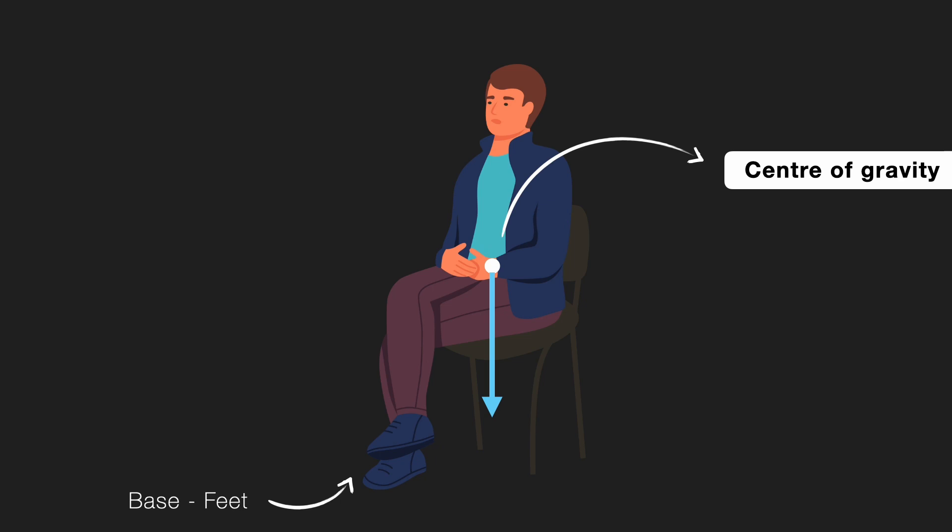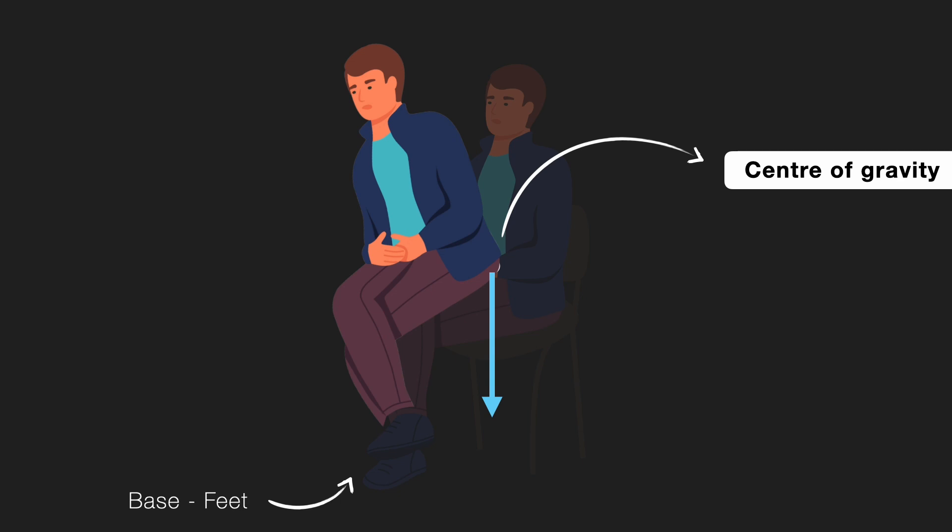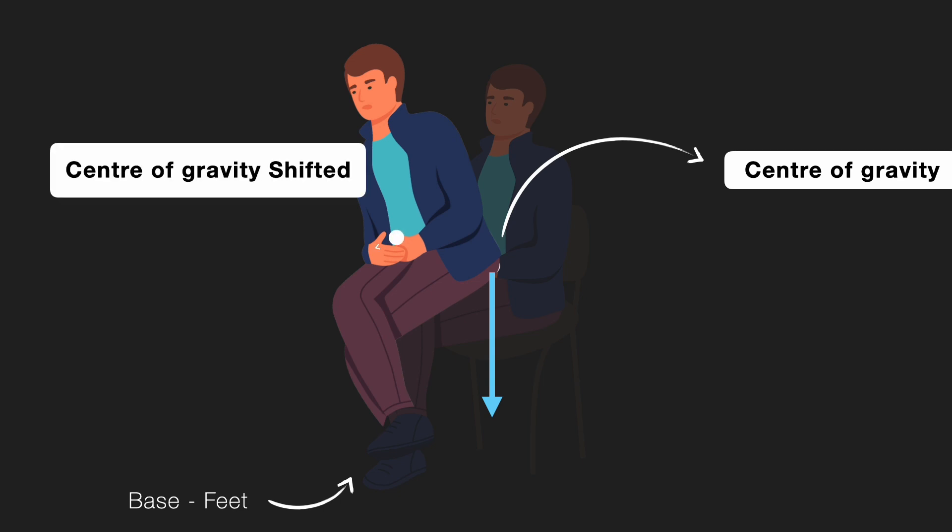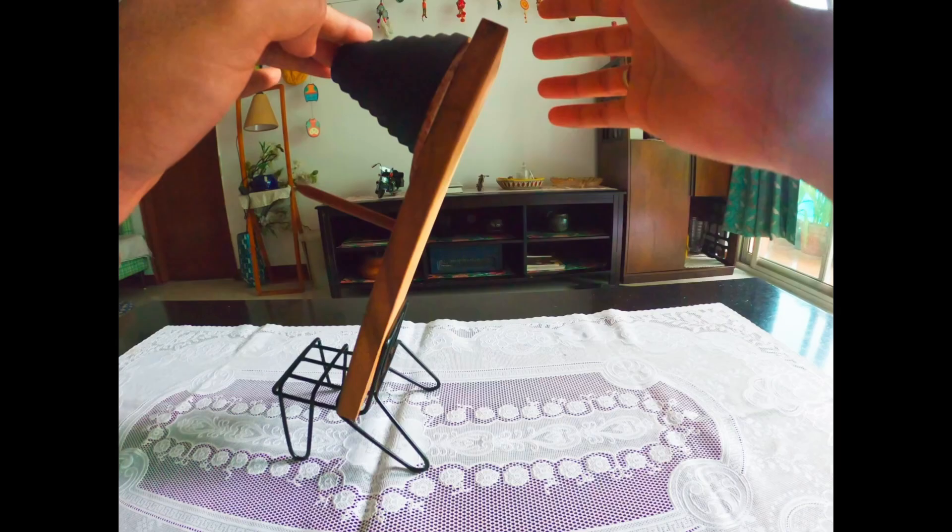But in this case, if you lean forward and try again, what happens? Your center of gravity also shifts forward, and now the vertical line falls within your base - that's your feet. And just like that, it becomes easy to stand up.